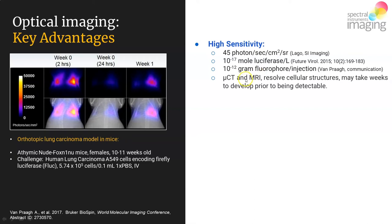Other highly resolving modalities like micro CT and MRI are very good at resolving cellular-level structures. However, when you initiate a model system by injecting cells, it may take weeks to reach the point where structures are of a size resolvable by micro CT or MRI. With high sensitivity comes early-onset detection. Here, thymic nude mice have been challenged with A549 cells lodged in the pulmonary capillary bed, and following a luciferin injection, you can clearly see the light emitted courtesy of luciferase activity.